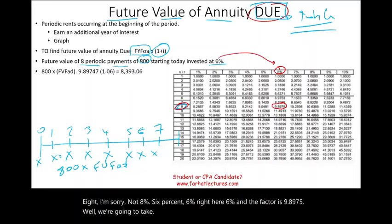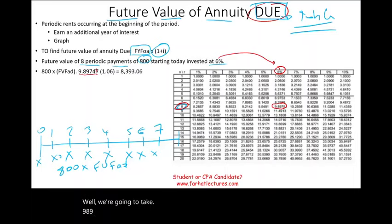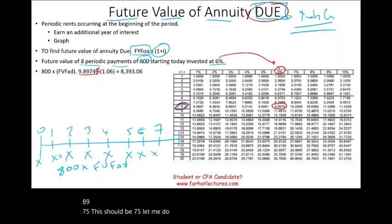We take 9.8975 times 1.06 — converting it to an annuity due — which gives us 10.4912. We then multiply 10.4912 by $800, and we get approximately $8,393.